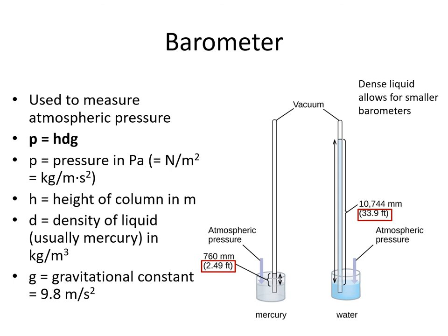The height h is in meters, and d is the density of the liquid. Most columns use mercury, but other liquids like water can be used. Density needs to be expressed in kilograms per cubic meter. The last variable is g, the gravitational constant, which is 9.8 meters per second squared. As we use this equation, it's important to have units canceling out properly, so we need to get everything in the correct units before plugging into the equation.